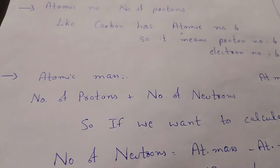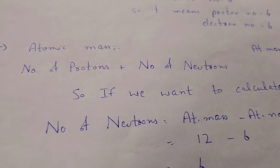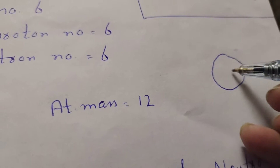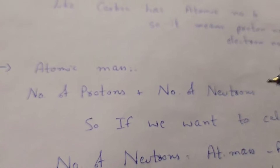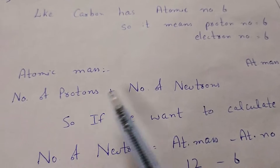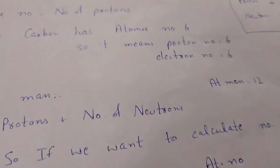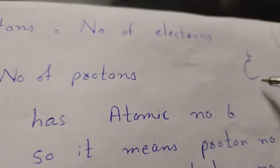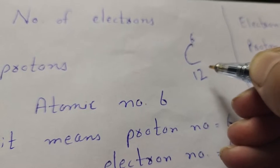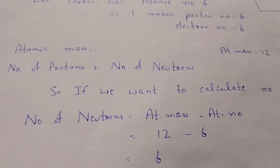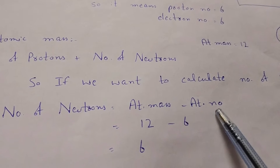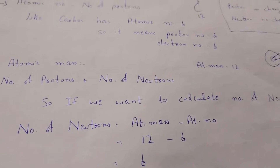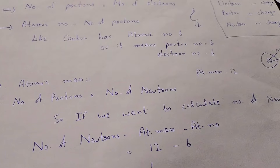To find the number of neutrons, use the formula: atomic mass minus atomic number. For carbon, atomic mass is 12 and atomic number is 6, so 12 minus 6 equals 6 neutrons. You don't have to memorize the atomic number and atomic mass — they will be provided.